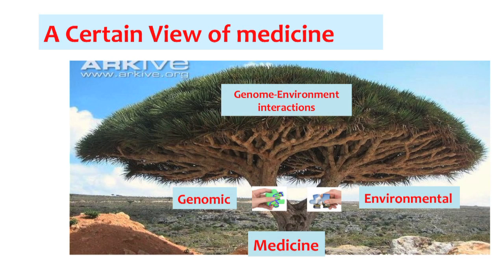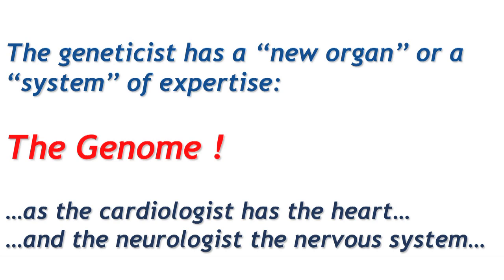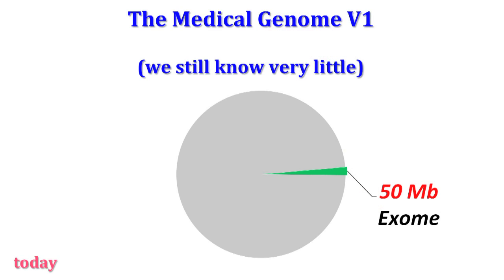The health professional — the geneticist — has a new organ or system of expertise: an invisible but tremendously important system, the genome. Like the cardiologist has the heart and the neurologist has the nervous system. And yet in that three-billion-letter text we receive from our mom and from our dad, we know very little. We only know the function of 1.5% — only the part of the genome that encodes for proteins, which you see in the green sector of the chart. With this knowledge of 1.5%, we can already make several diagnoses and have an impact in medical practice today.